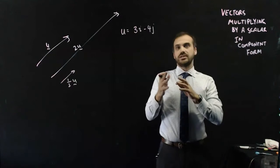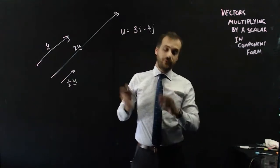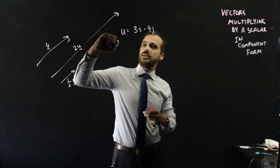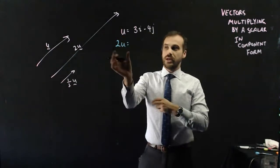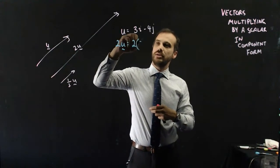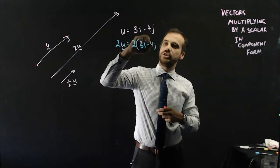What would a vector twice as long as that be? Well, it's really straightforward. We just follow our algebraic rules. We can just say that 2u, a vector twice as long as u, would be equal to 2 times 3i minus 4j.